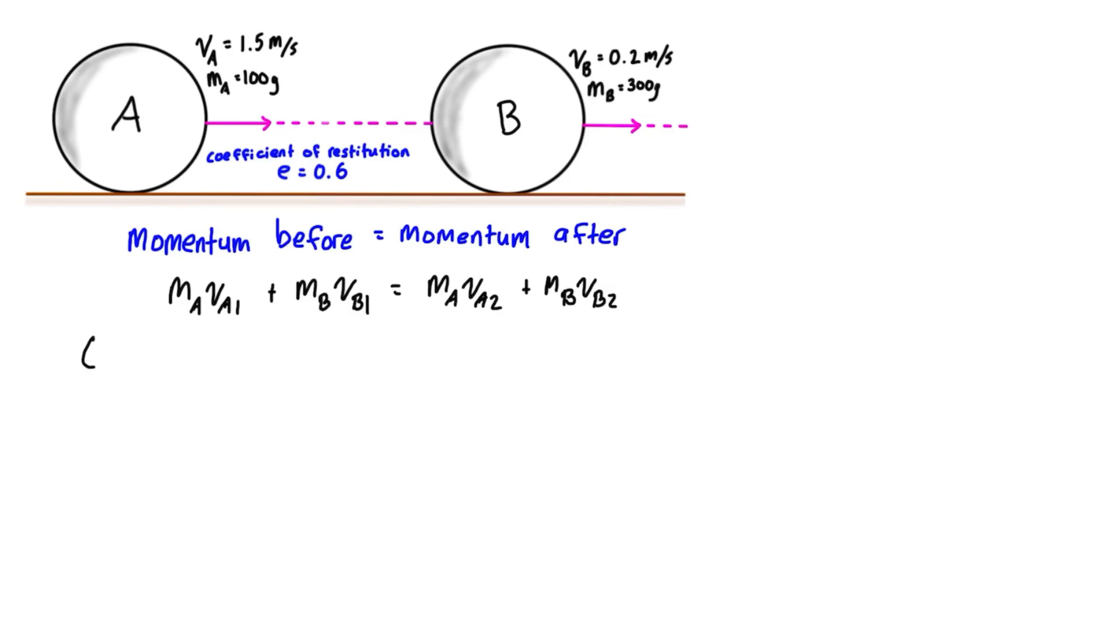mA is 100 grams, so it's 0.1 kilograms times 1.5 meters per second, plus the mass of B is 300 grams, so that's 0.3 kilograms times its velocity, which is positive 0.2 meters per second. Both of the velocities are positive because they're both going to the right. We can even define the right as a positive direction, and then we can just write in our masses, so we have 0.1 kilograms times vA2 plus 0.3 kilograms times vB2.